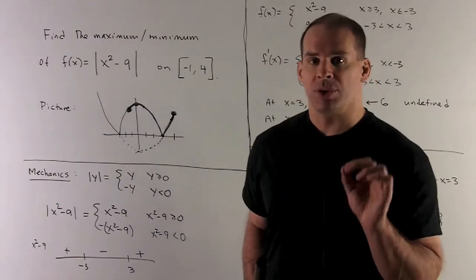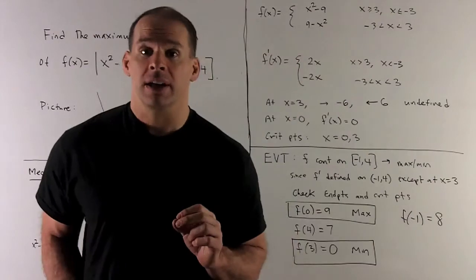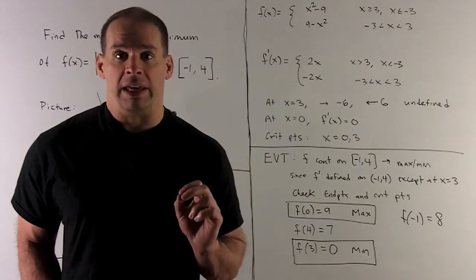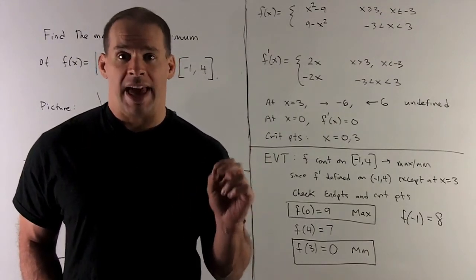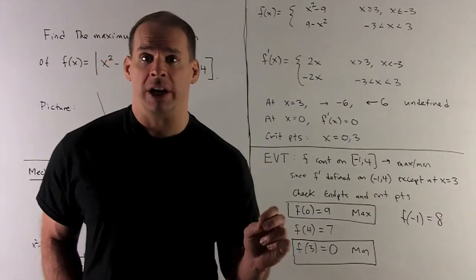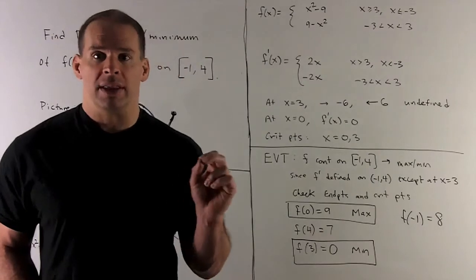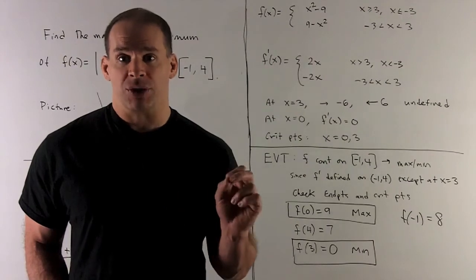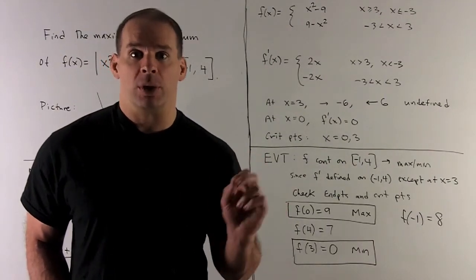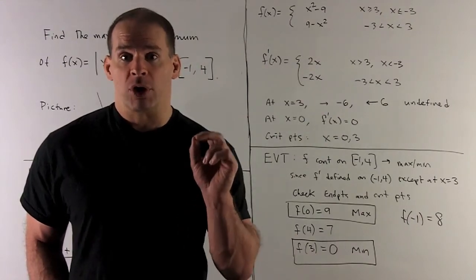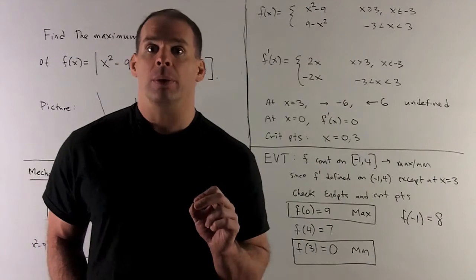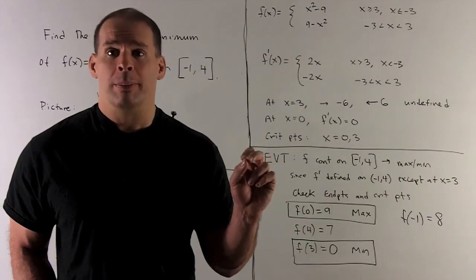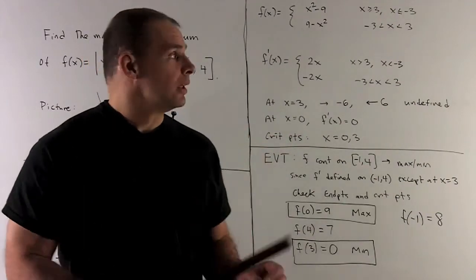Note that at x = 3 we expect the derivative to be undefined because there's a corner there. For x between -3 and 3, the derivative is -2x. For x < -3 or x > 3, the derivative is 2x. Setting -2x = 0 gives x = 0, which is in the region (-3, 3), so we have a critical point at x = 0.